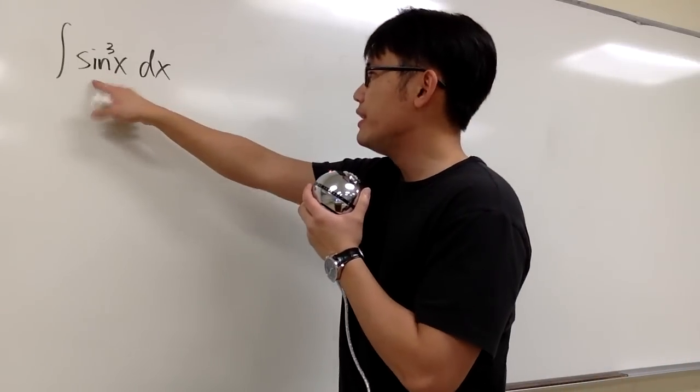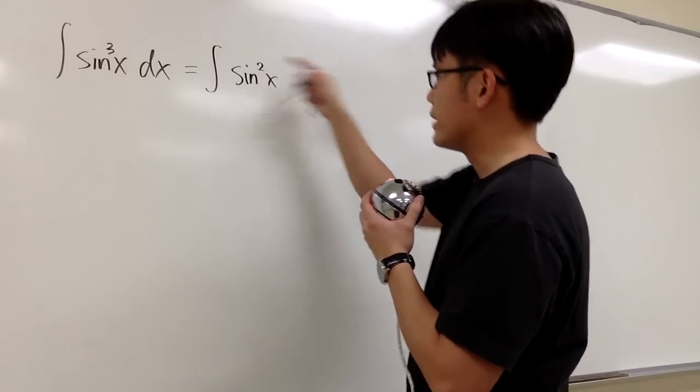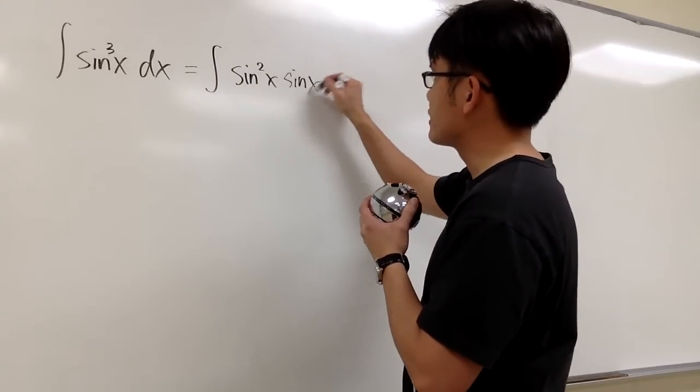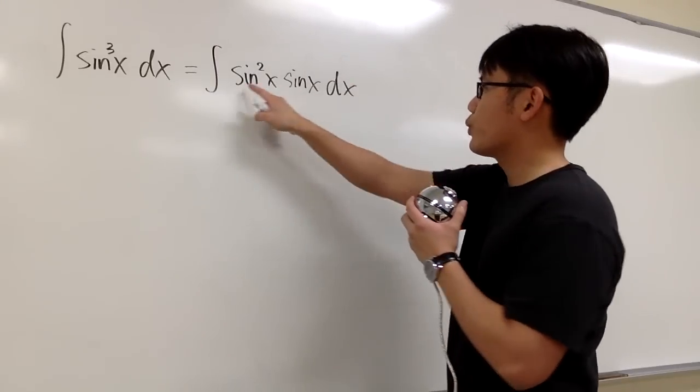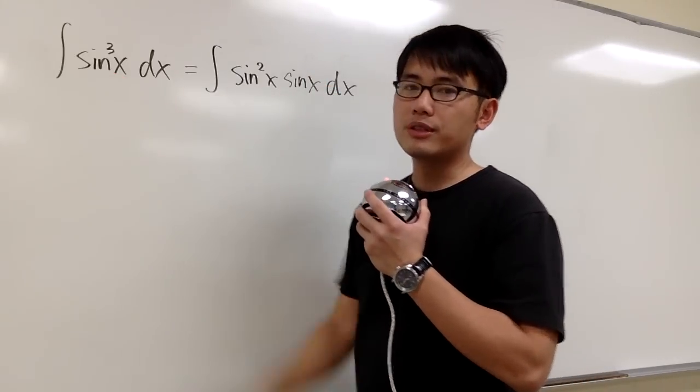Let me show you. This will be the same as integrating sine to the second power x, and then we take out one of them, so we have sine x right here. And we can quickly check this. Sine to the second power times sine to the first power is still the same as sine to the third power.